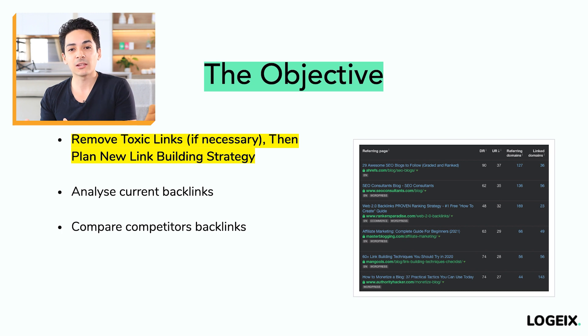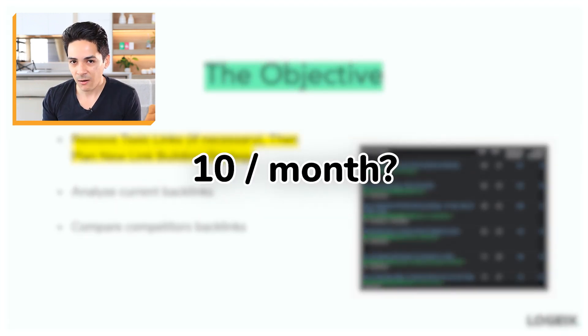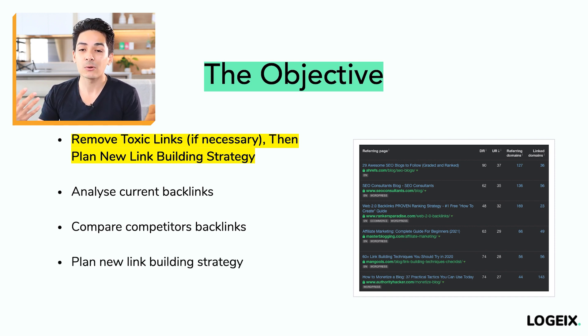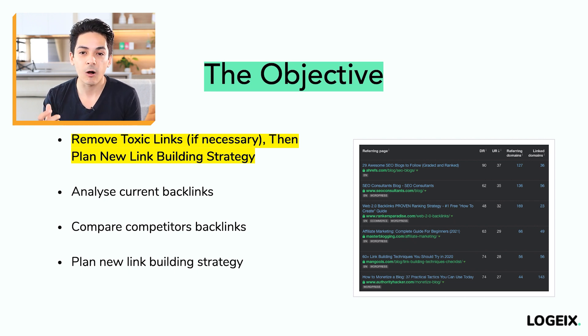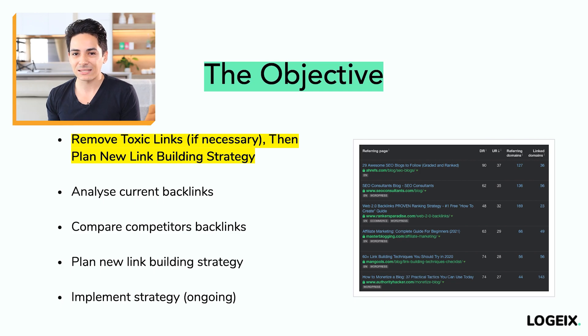Beyond that, compare your competitors' backlinks — how many do they have, and what velocity are they building links at: 5, 10, or 100 links a month? We need to match what competitors are doing if we have the budget. Then plan your new link building strategy: what types of links, what anchor text, which pages to link to. Plan the full strategy and implement it on an ongoing basis — you don't do link building one time. It's a consistent, ongoing process every single month, essentially forever.